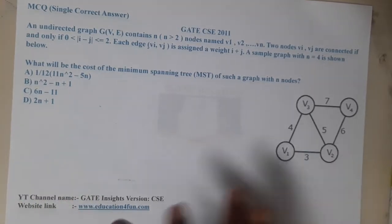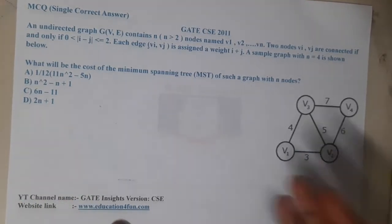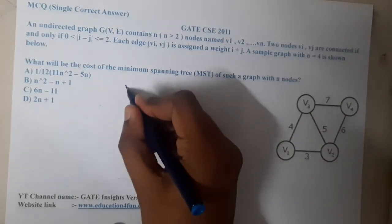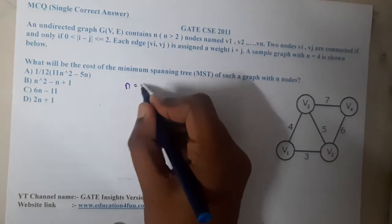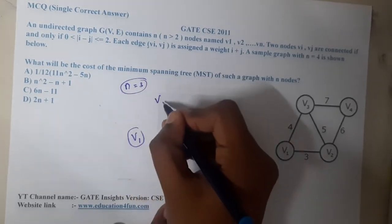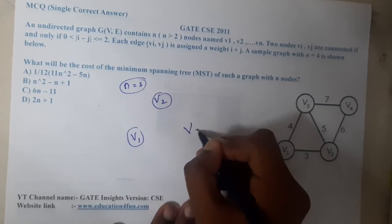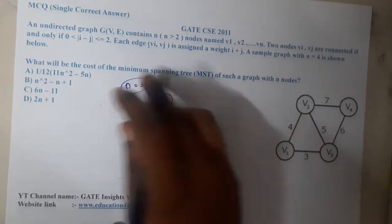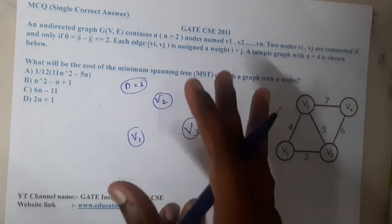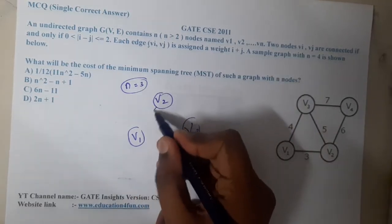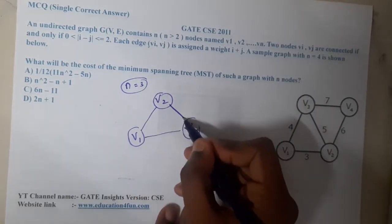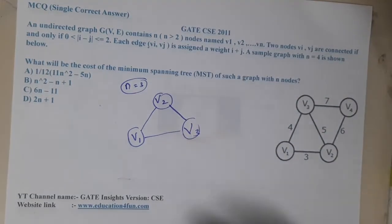For our easy understanding, instead of solving on n equal to 4, let us solve on n equal to 3. So we have v1, v2, v3. If the distance is 1 or 2, you can add the edge. The distance between v1 and v2 will be 1, between v2 and v3 will be 1, and between v1 and v3 will be 2. So it is a complete graph.